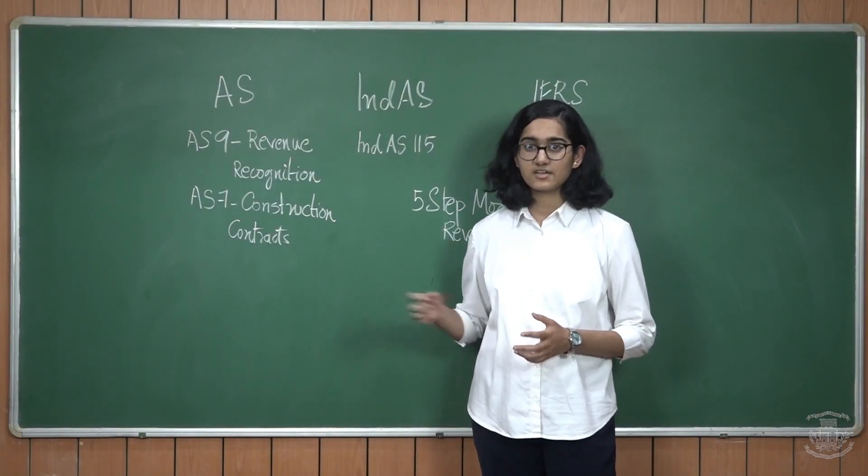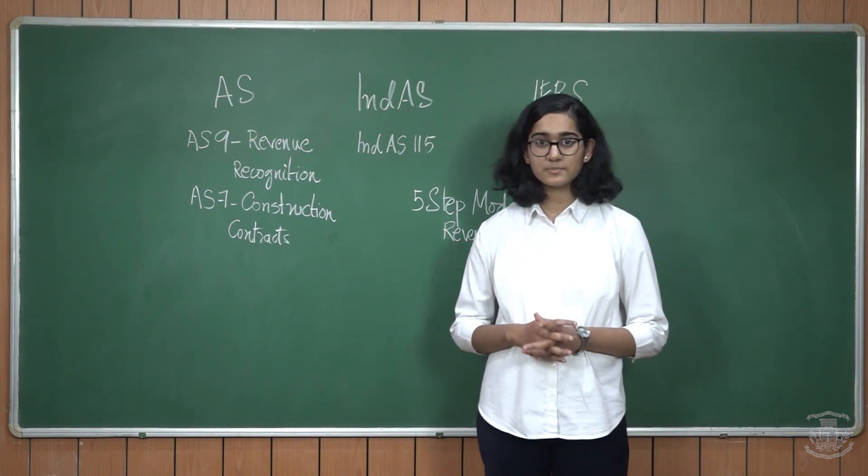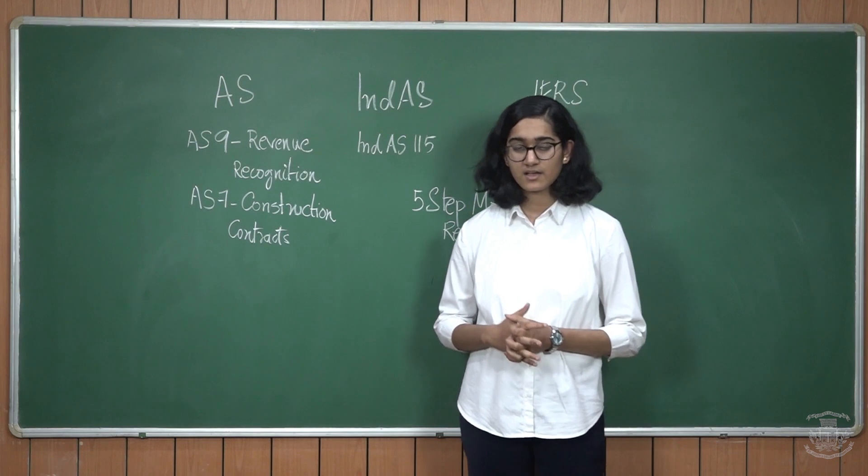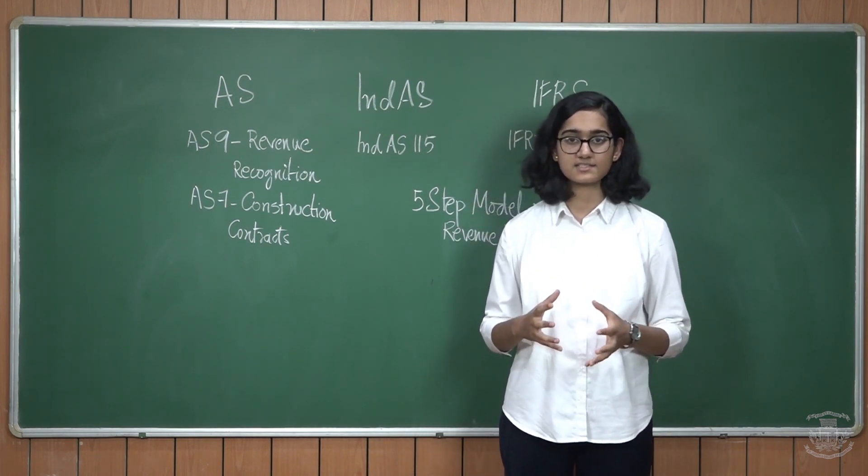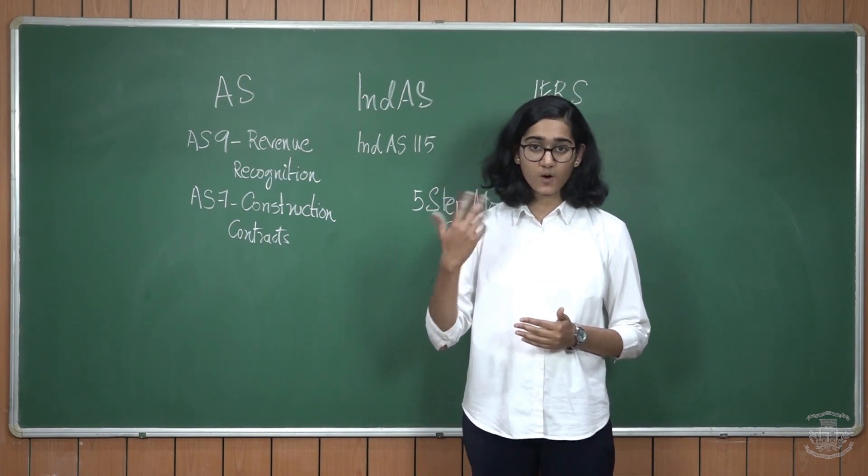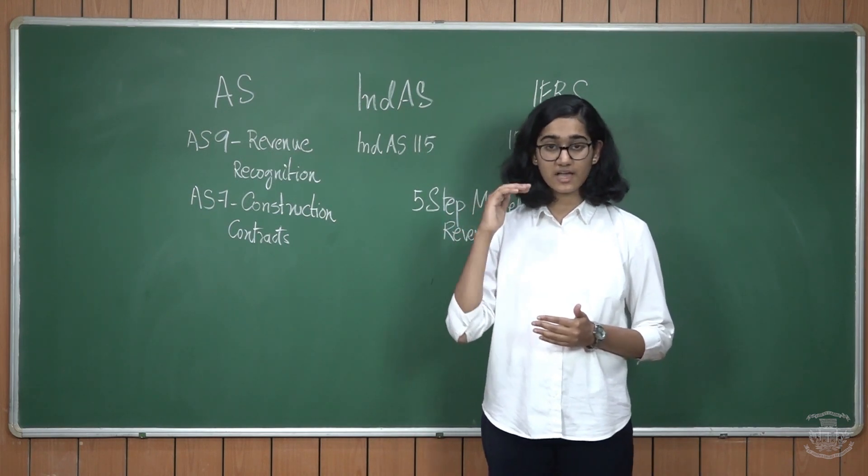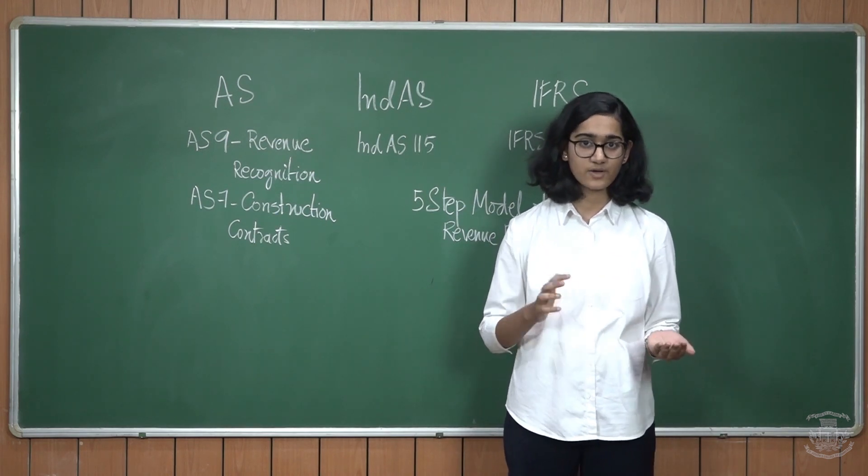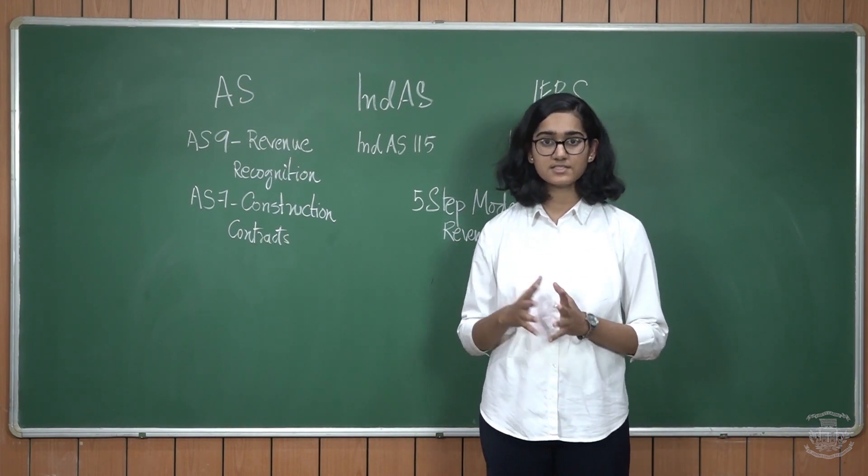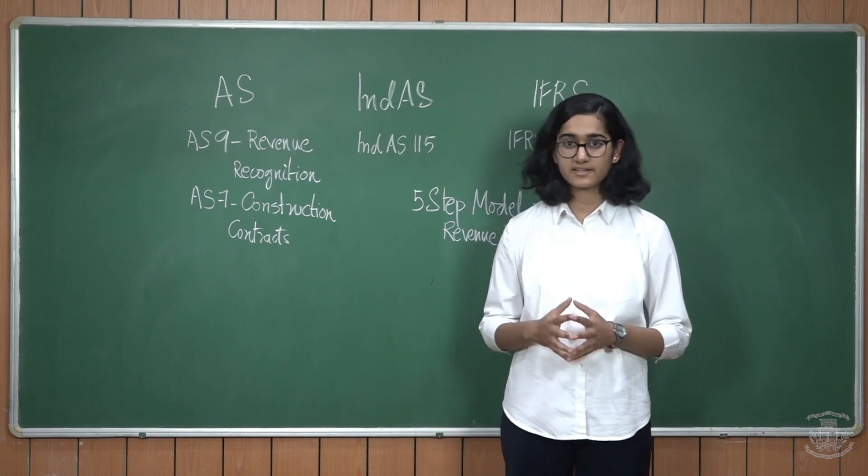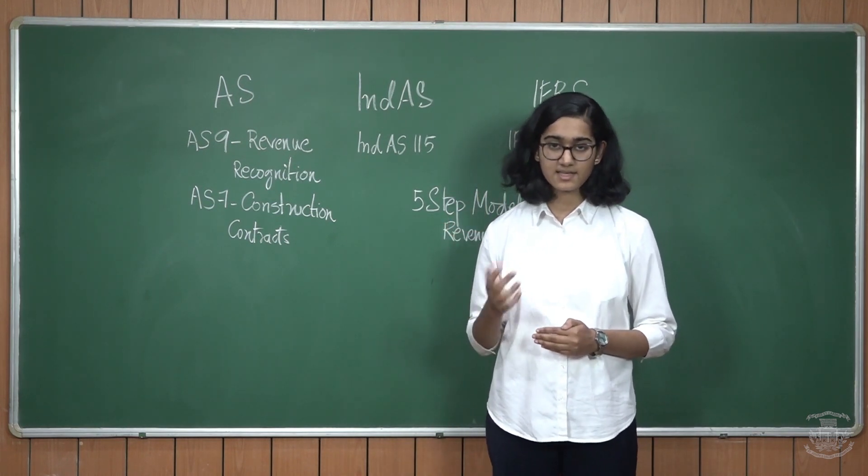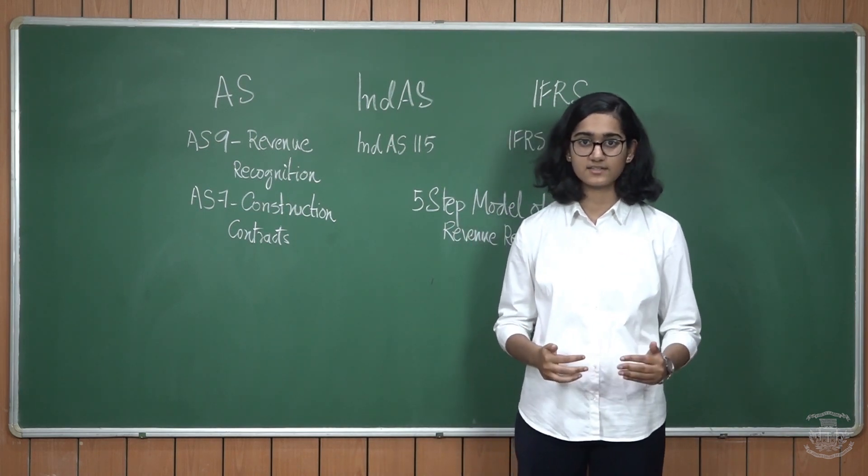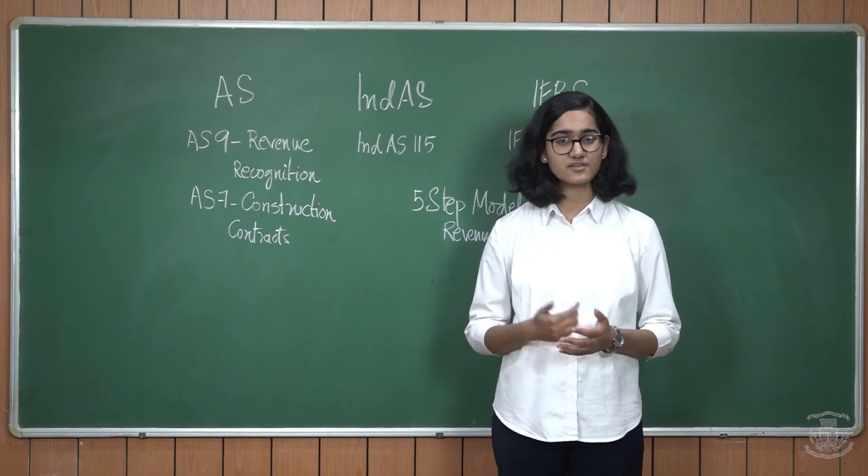Let's look at AS7 construction contracts. This standard mainly deals with recognition of revenue arising from construction contracts. The most important thing is that if the entity can estimate the outcome of the contract reliably, then the entity can recognize contract revenue and contract cost based on percentage completion method. But if the entity cannot get a reliable estimate, then the contract revenue is only recognized up to the contract cost incurred and to the extent of which recovery is possible.